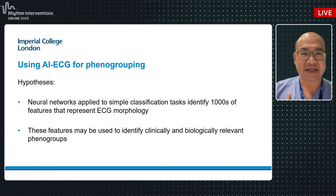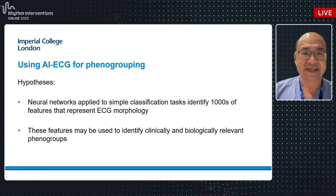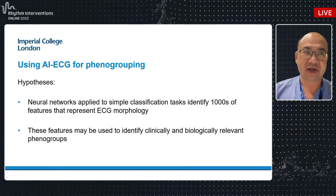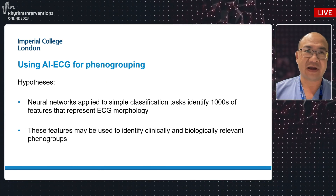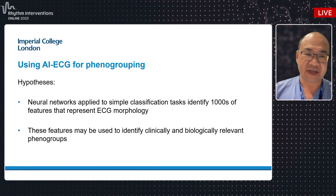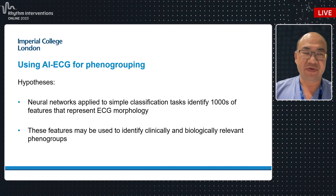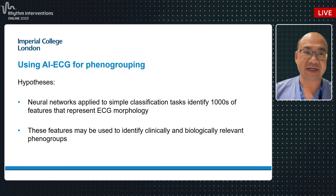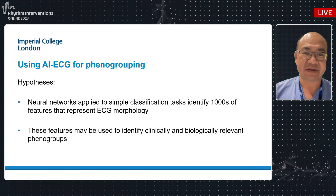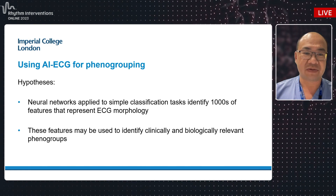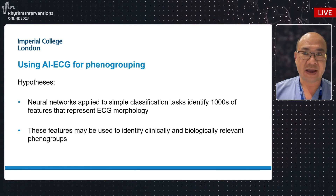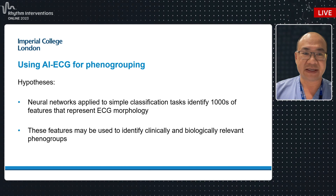I'm going to share some work we've been doing using AI ECG to derive phenol groups with different risk profiles and different biological meaning. We hypothesized that if you show a neural network millions of ECGs, it will over time learn multiple subtle features of the ECG that have clear clinical and biological relevance — features that can help us as EPs and clinicians.